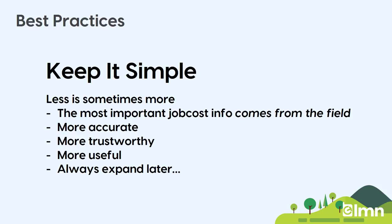We strongly recommend you keep everything simple. The more complicated you make your chart of accounts, the more likely stuff gets in the wrong places and you stop trusting your numbers. Sometimes less is more — and in the case of landscape accounting, that's probably true. Most of your important job costing comes from the field, and labor is probably the single biggest factor in making or losing money. We have problems just getting a date on a timesheet, much less the right job, cost code, task, or hours. Things that are simple tend to be more accurate, more trustworthy, and more useful. It's much easier to expand and get more detailed later than to try to simplify once things are complicated.